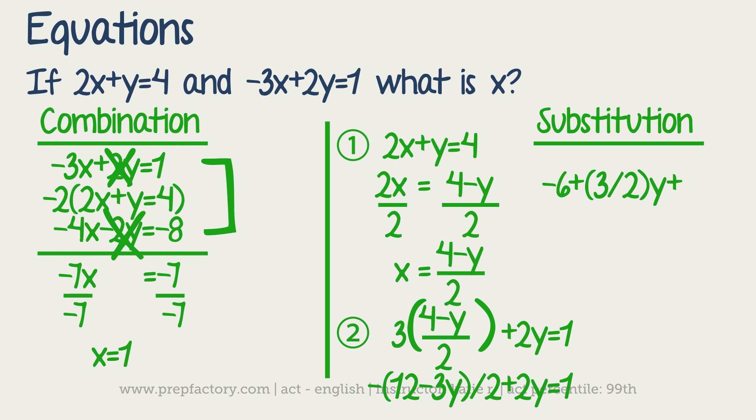And then if we're moving up top here, I've got negative 6 because I distributed. Negative 6 plus 3 over 2y plus 2y is equal to 1. That simplifies down to negative 6 plus 7 over 2y equals 1. Which then if you move the 6 to the other side, you have 7 halves y equals 7.